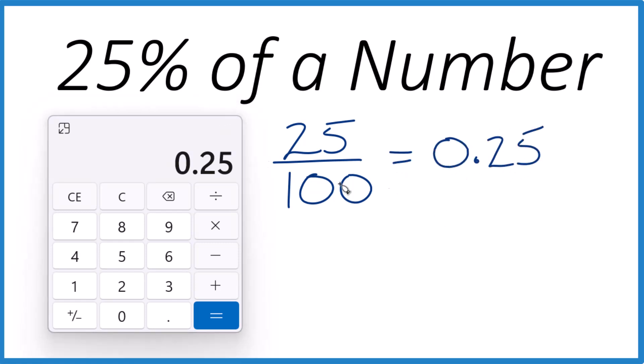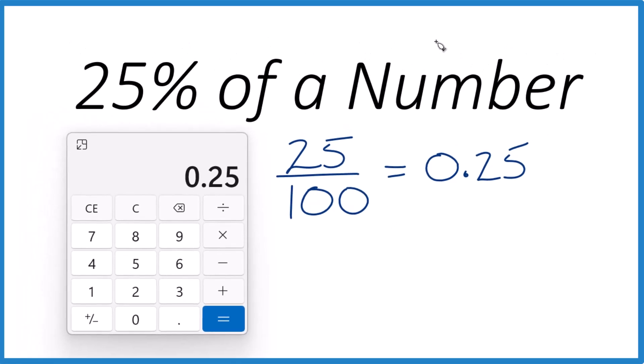So now we've converted our percent to a decimal. And any number we want to take 25% of, we just multiply it by 0.25. So say you wanted to take 25% of 36. You do this. So 0.25 times 36 equals 9. We just took 25% of a number.